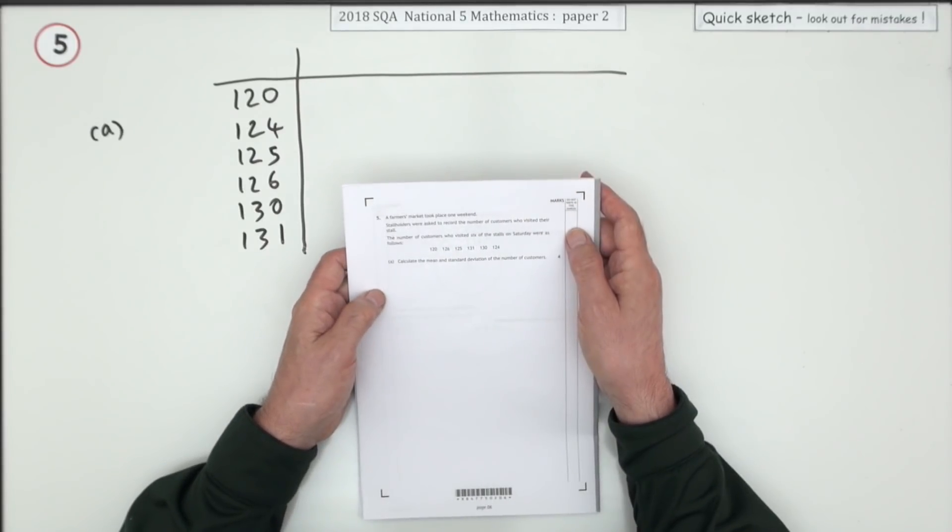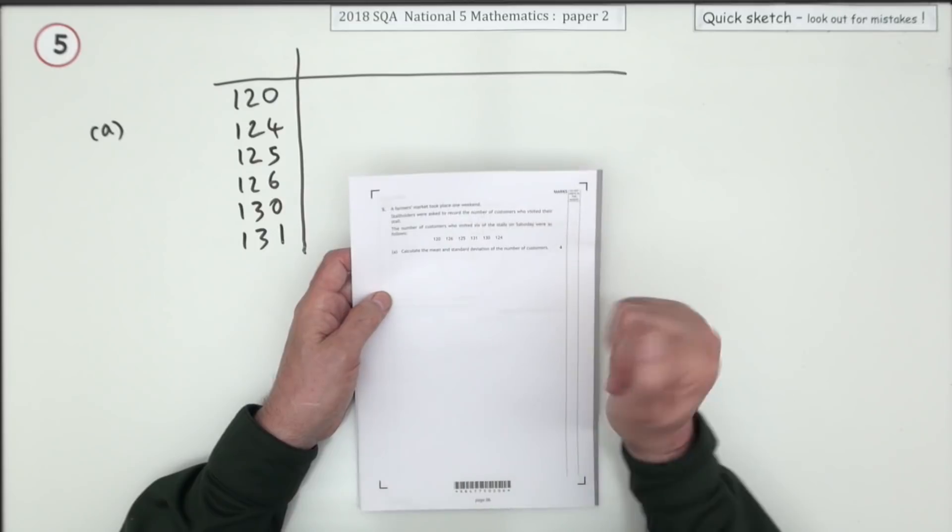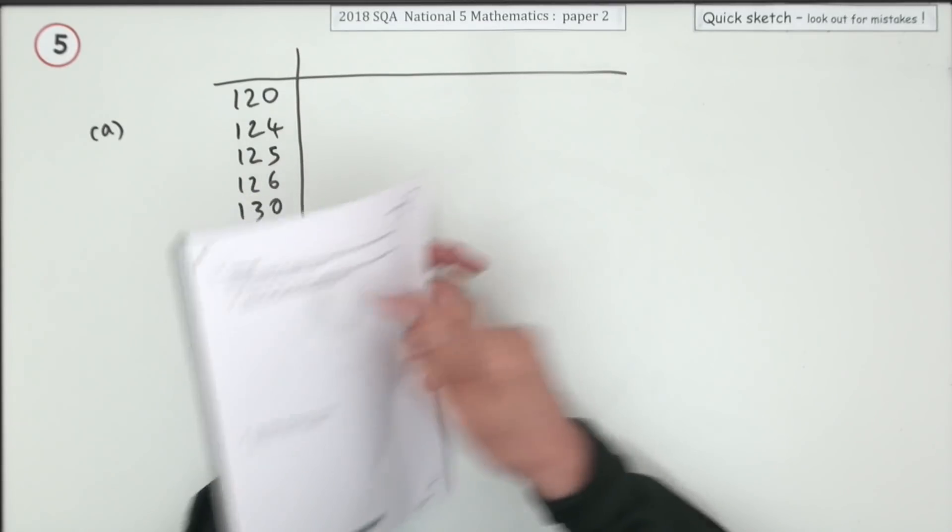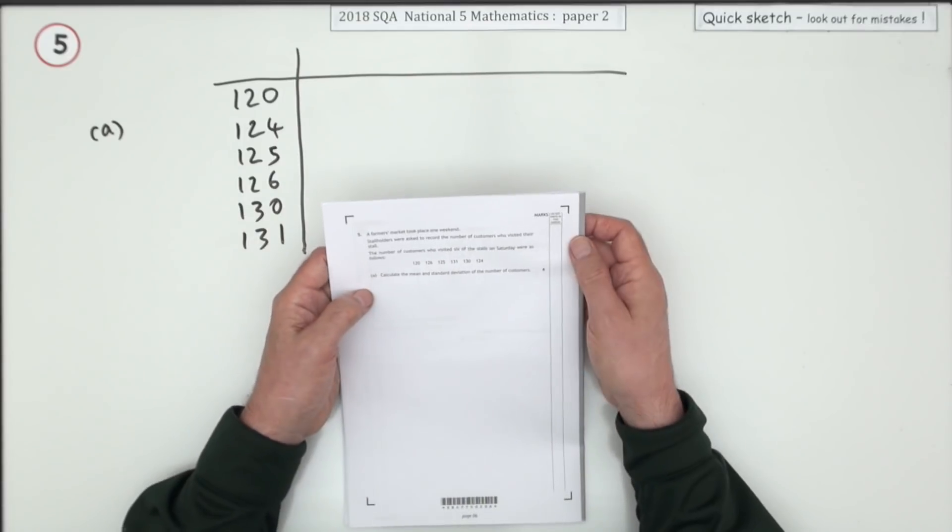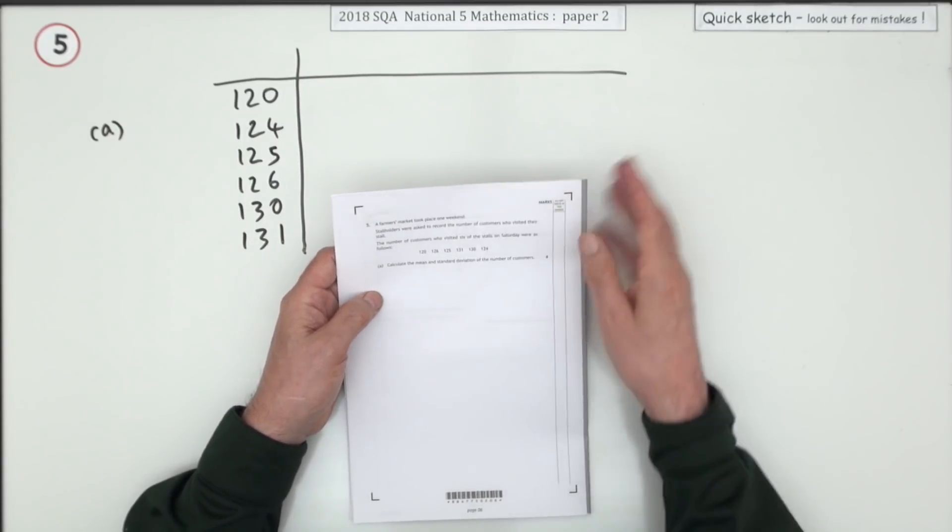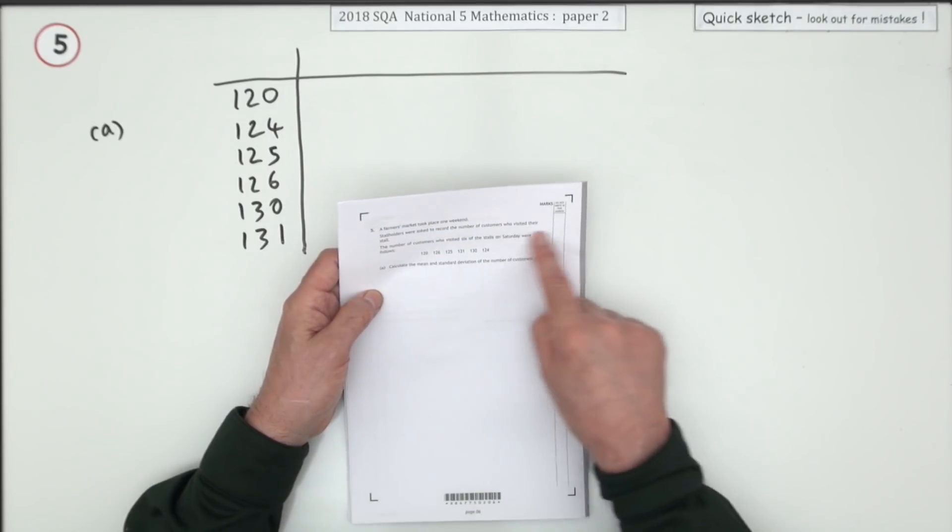Number five from paper two of the 2018 National Five. The standard deviation questions - you like it and at the same time you don't, because you know you've got to make those big tedious statements at the end of it. Still, you quite like it because you know exactly what to do.